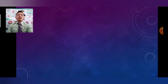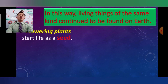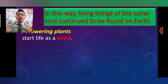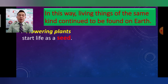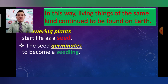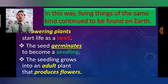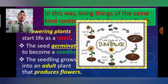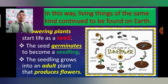In this way, living things of the same kind continue to be found on Earth. Flowering plants start life as a seed. The seed germinates to become a seedling, and the seedling grows into an adult plant that produces flowers. As seen in this picture of the sunflower life cycle, it starts from the seeds, then roots sprout, it becomes a baby plant, then an adult plant, and then the seeds fall on the ground and start to grow again.